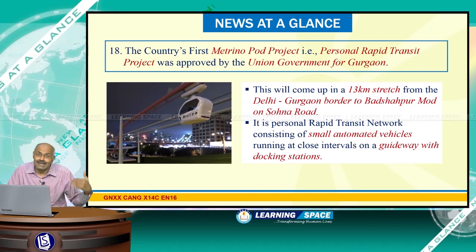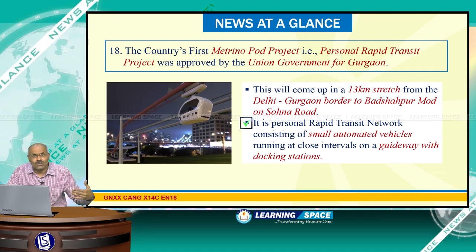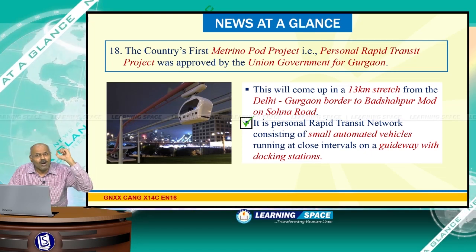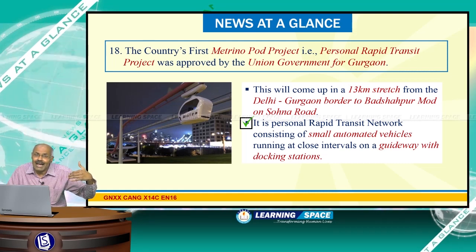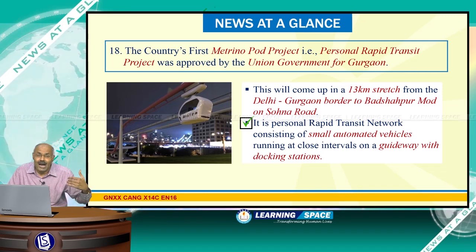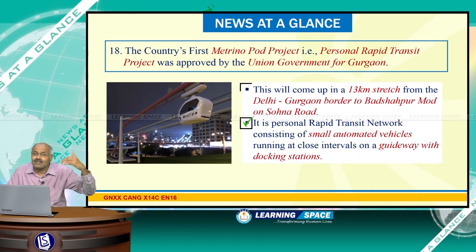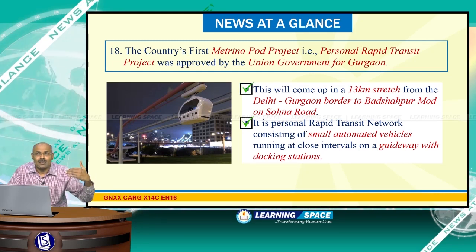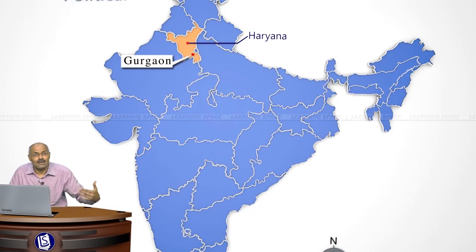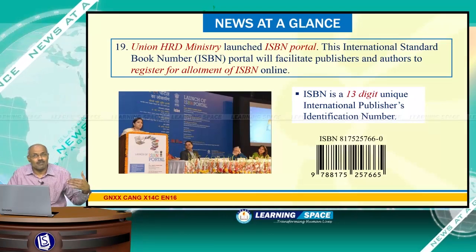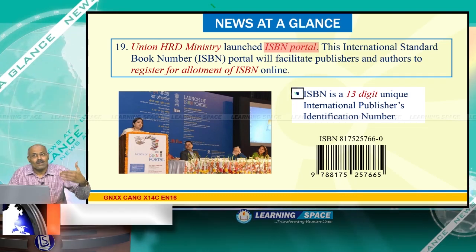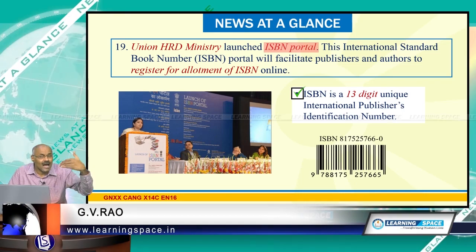The country's first Metrinopod project, also known as the Personal Rapid Transit (PRT) project, consists of small automated vehicles running at close intervals on a guideway with docking stations, acting as a personal rapid transit network. People can hire these and move from one place to another. This will come up in a 13-kilometer stretch from the Delhi-Gurugram border to Badshahpur on Sohna Road, in Haryana.